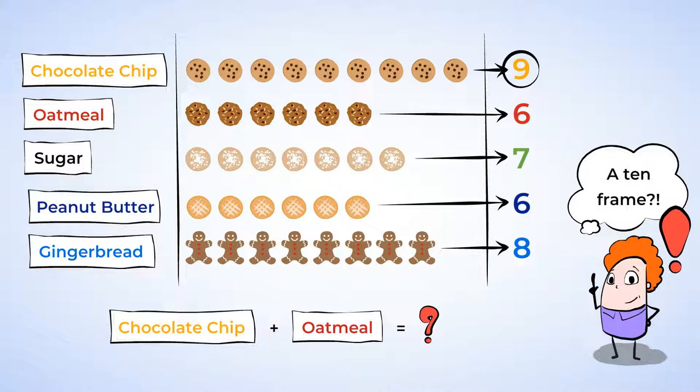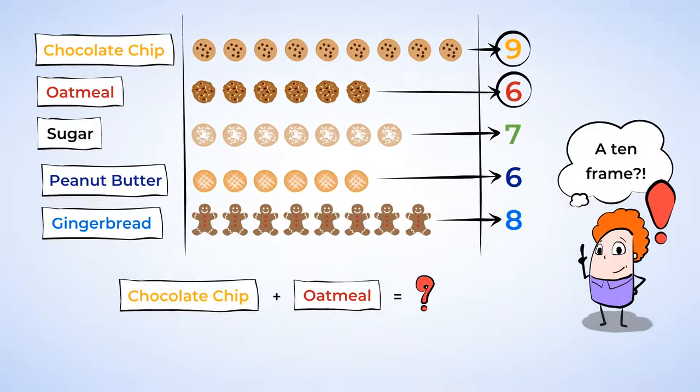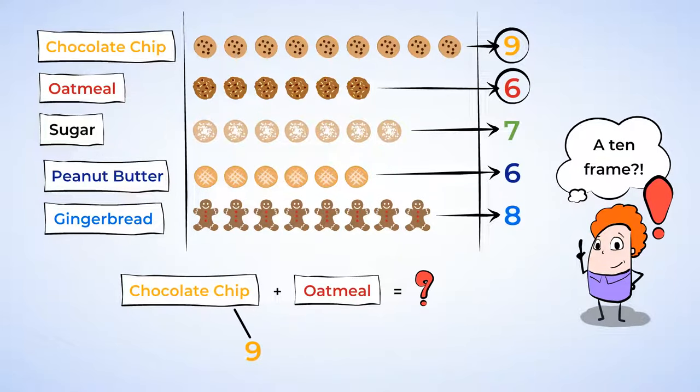There are nine people who like chocolate chip cookies and six people who like oatmeal cookies. So you need to add nine plus six. You are going to use your 10-frame to make this efficient.